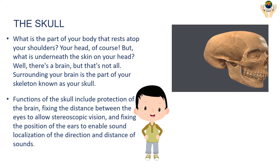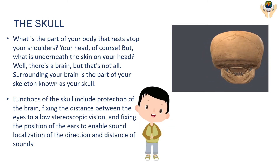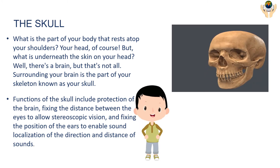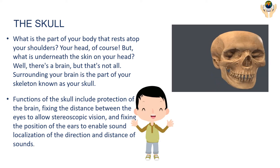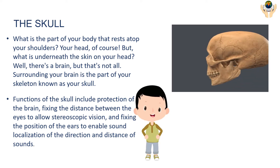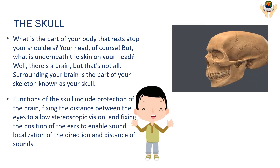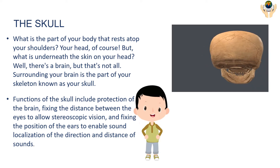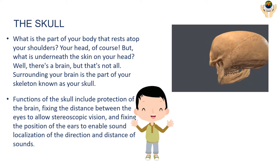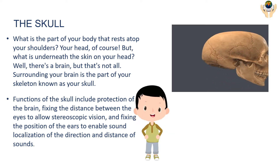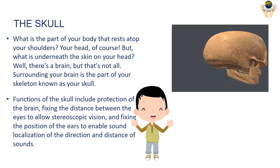The skull — what is the part of your body that rests atop your shoulders? Your head, of course. But what is underneath the skin on your head? There is a brain, but surrounding your brain is the part of your skeleton known as your skull. Functions of the skull include protection of the brain, fixing the distance between the eyes to allow stereoscopic vision, and fixing the position of the ears to enable sound localization of direction and distance.